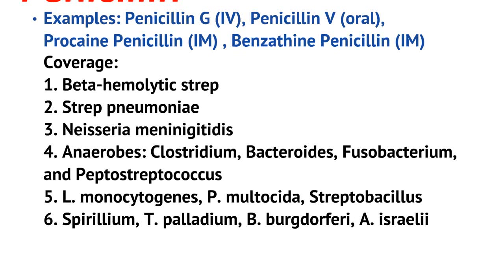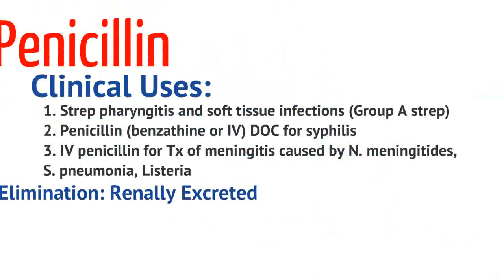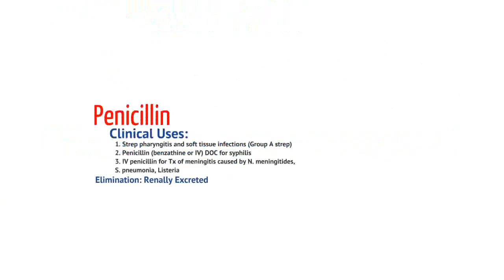These are some of the bacteria covered by basic penicillin, but it's important to understand our current clinical use. Penicillin is used in strep pharyngitis and soft tissue infections. Benzathine or IV penicillin is the drug of choice for syphilis. IV penicillin is used in the treatment of meningitis caused by Neisseria, strep pneumonia, and Listeria. Penicillin is renally excreted and must be dose-adjusted if a patient has acute kidney injury.